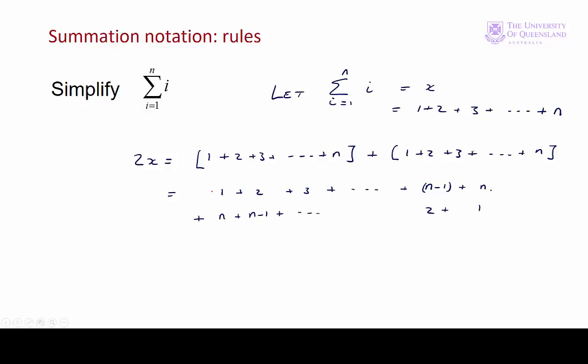If we look at the pairs, we have n plus 1 there. 2 plus n minus 1, which is n plus 1. And so on. We have n minus 1 plus 2, which is n plus 1. n plus 1, and then n plus 1 there. In other words, we have n plus 1, n times.